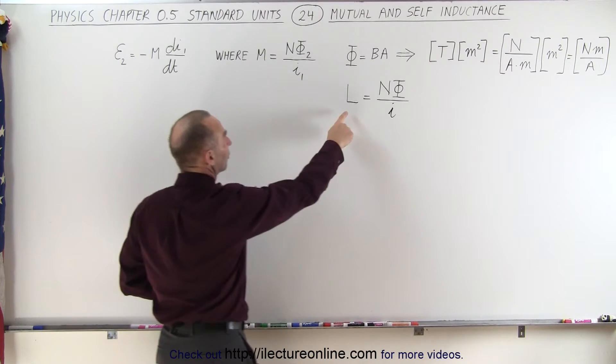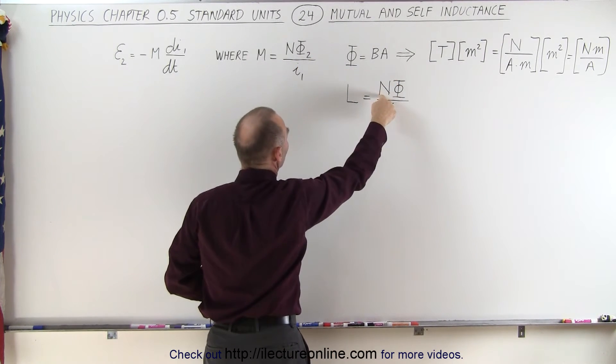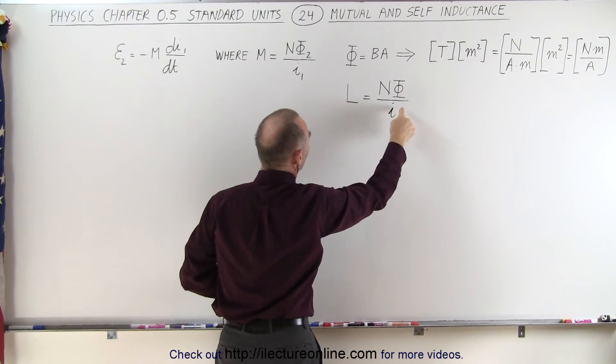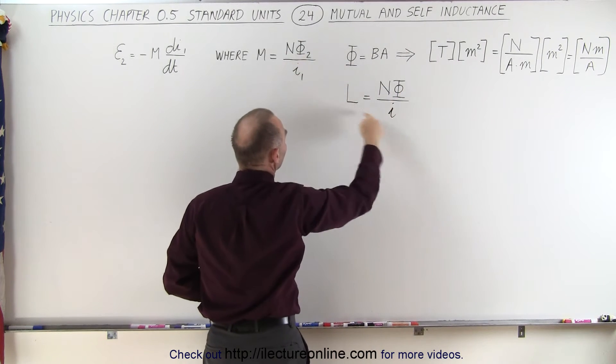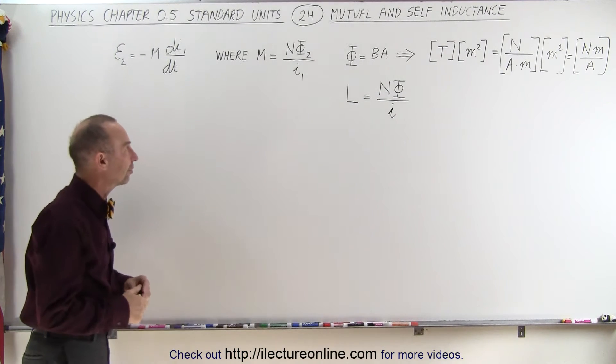Also notice that self-inductance has a similar formula. We have the number of turns in the coil, the flux going through the coil, and the current going through the coil. So you can see that the units should be the same for mutual inductance as it is for self-inductance.